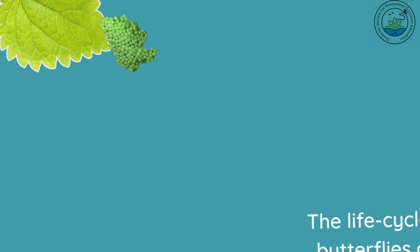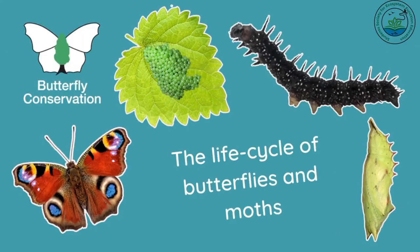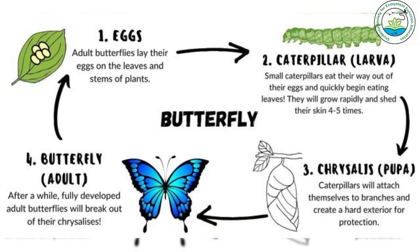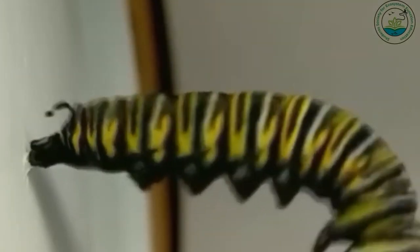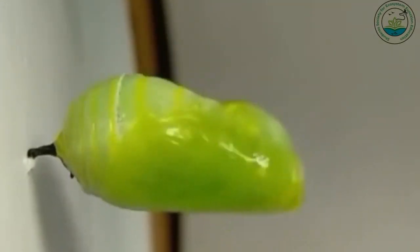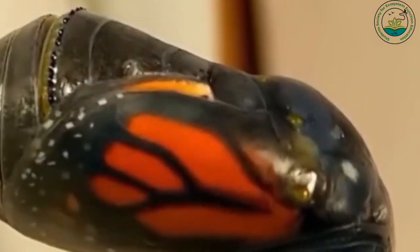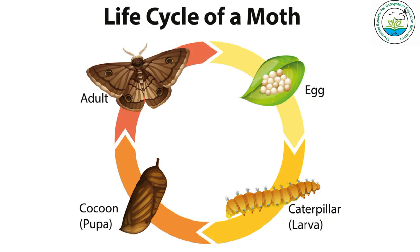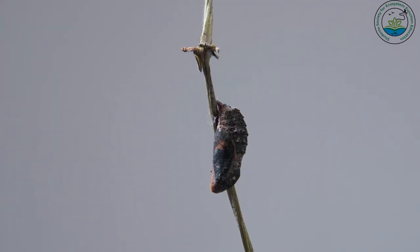Another fascinating distinction lies in their life cycle. Butterflies undergo a process called metamorphosis, starting as eggs, then transforming into caterpillars, forming a chrysalis, and finally emerging as butterflies. Moths also undergo metamorphosis, but often spin cocoons instead of a chrysalis.